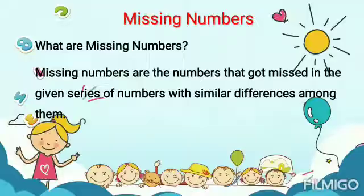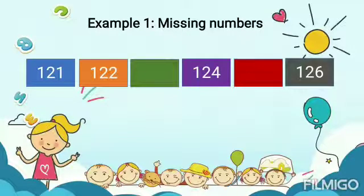First, let us see what are missing numbers. Missing numbers are the numbers that got missed in the given series of numbers with similar differences among them. Now, let us understand this with the help of an example.